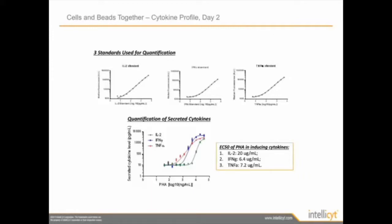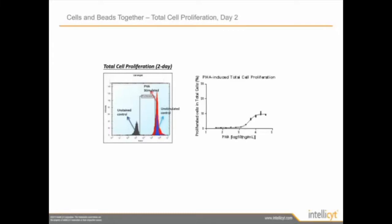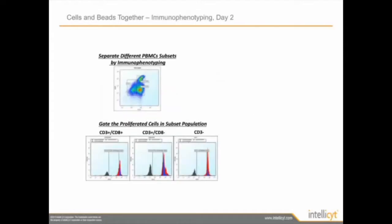At the two-day time point, the researcher was able to measure the presence of IL-2, interferon gamma, and TNF, getting very nice dose response curves with increasing concentration of PHA. At the two-day time point, the researcher saw very minimal PBMC proliferation — from the highest to lowest concentration of PHA, they only saw about a 10% increase in cell proliferation. The researcher also saw only a significant increase in cell proliferation with different cell subsets. For CD3/CD8 positive cells, the highest level of PHA was only able to stimulate 20% of the cells to proliferate.